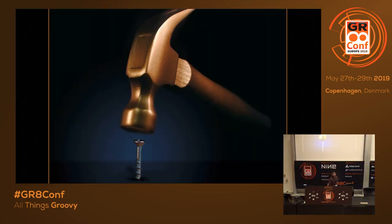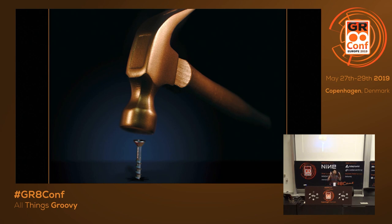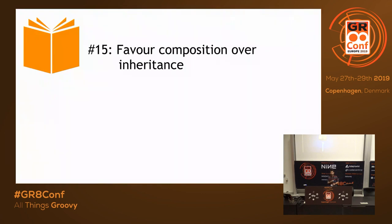Now to the golden hammer anti-pattern. With respect to Java, inheritance is perhaps the number one abused feature of the language. Effective Java says: favor composition over inheritance.